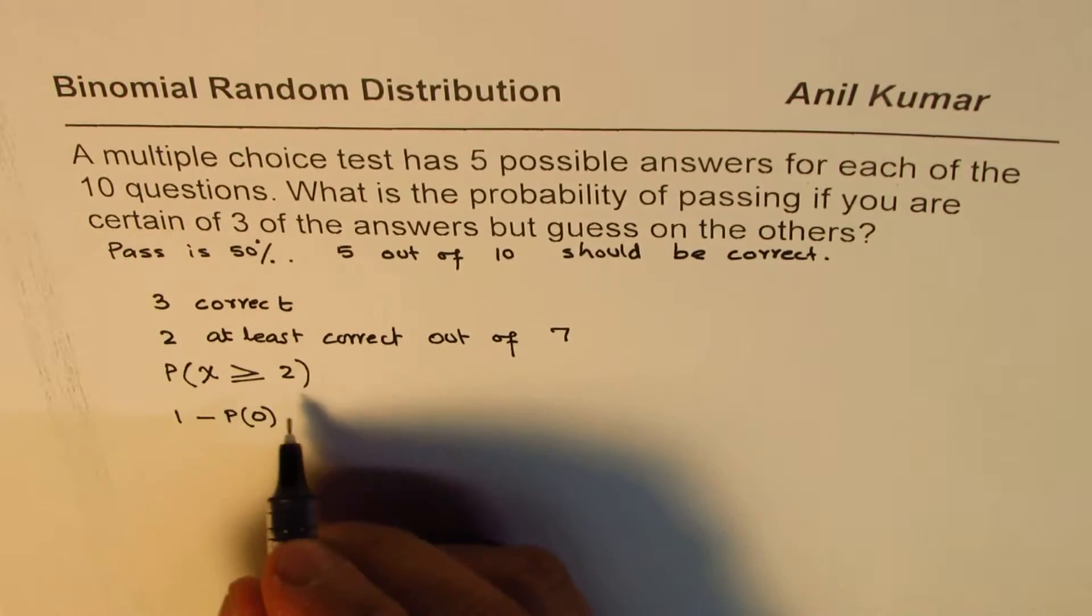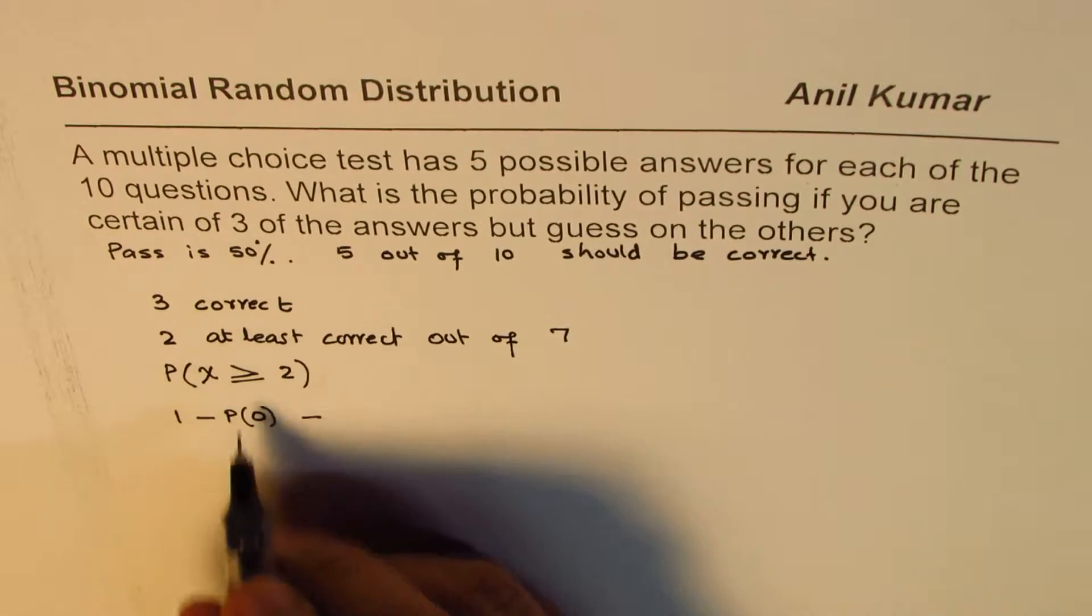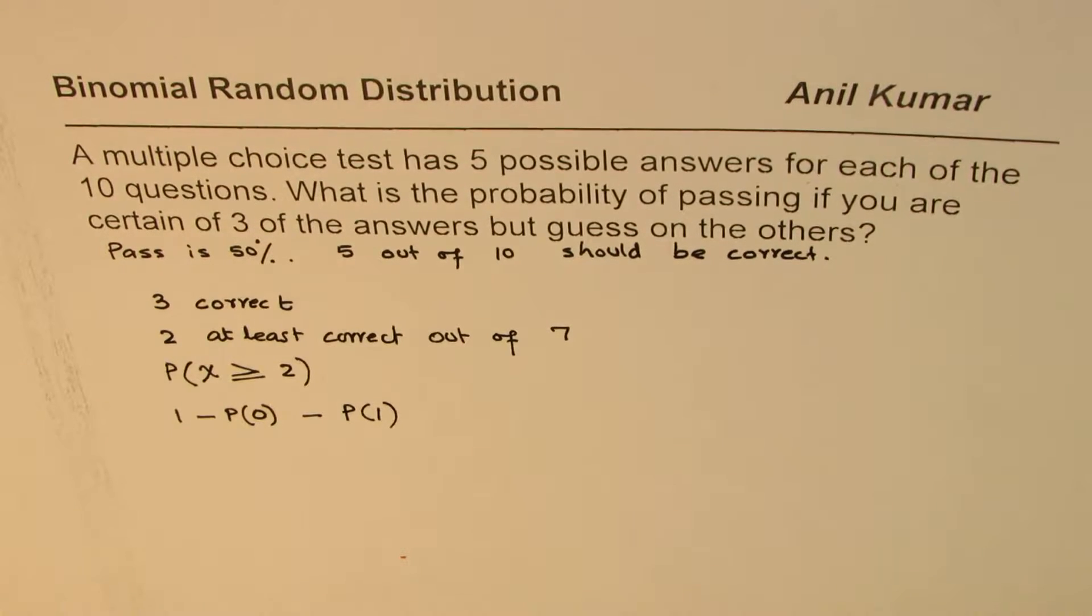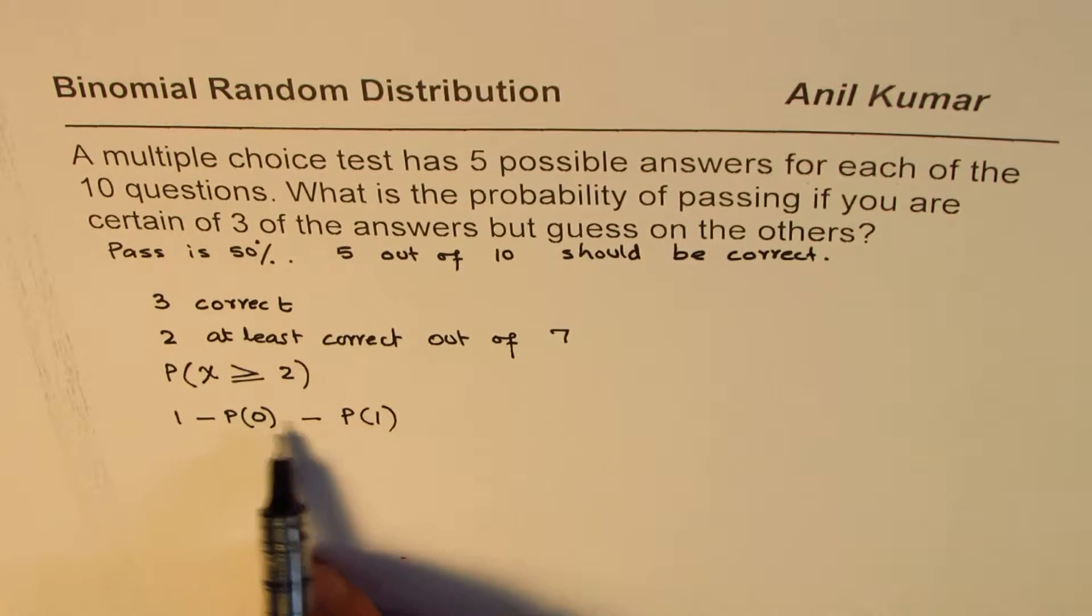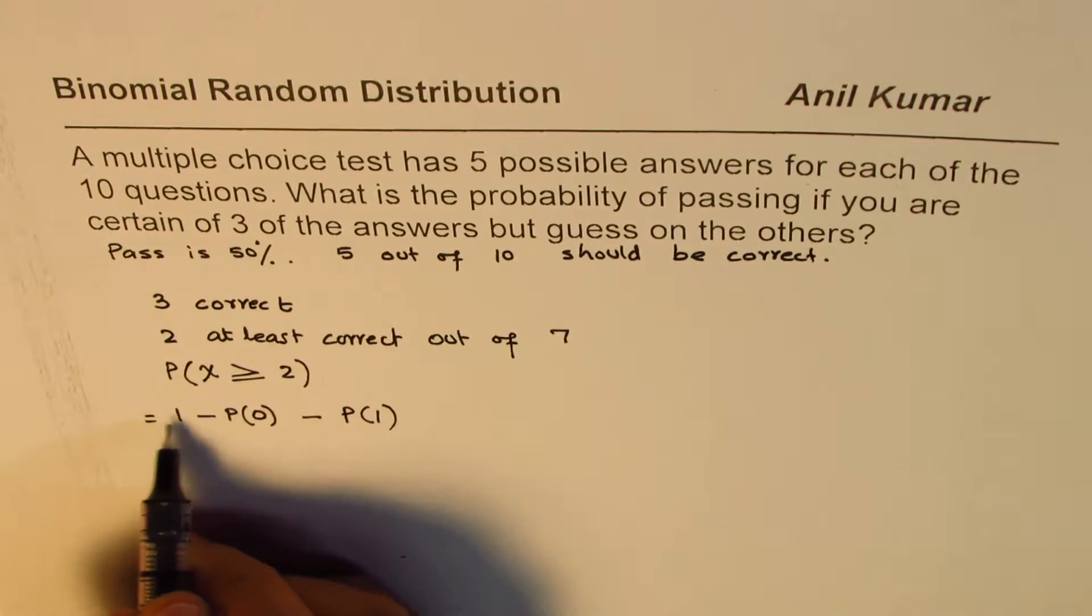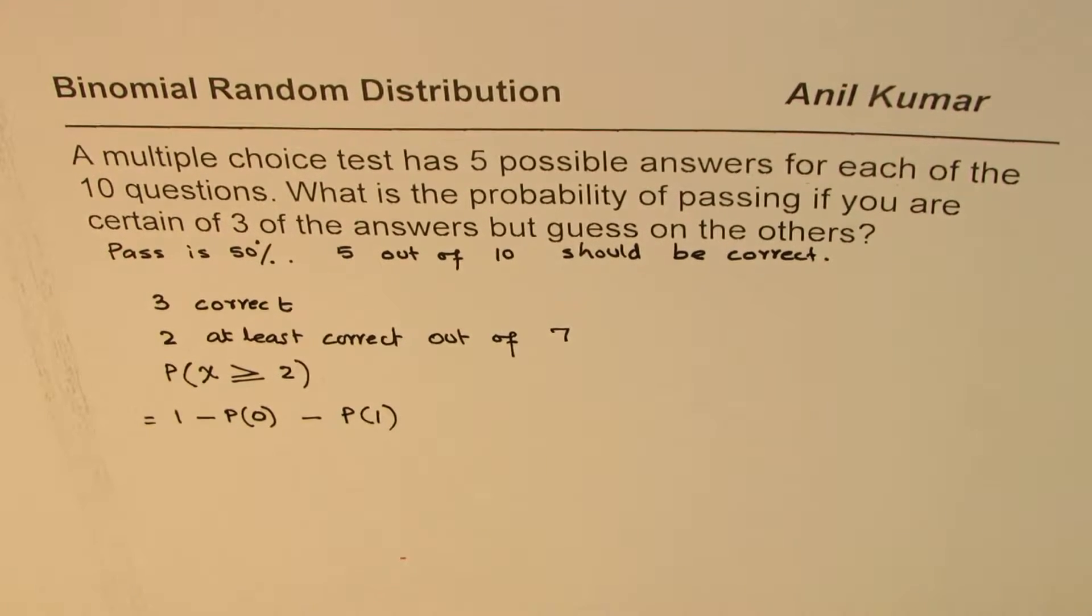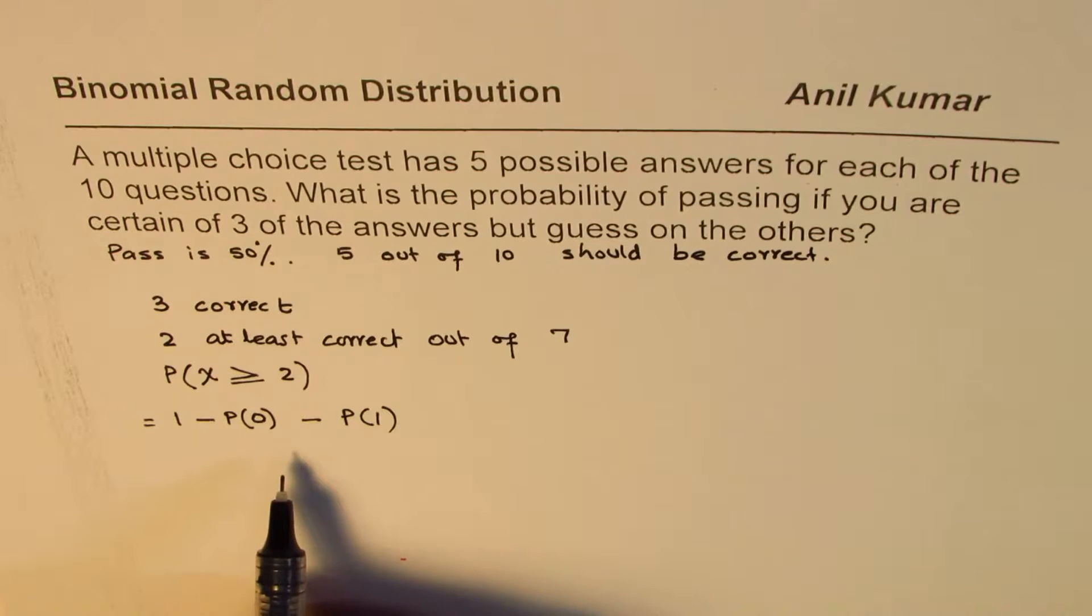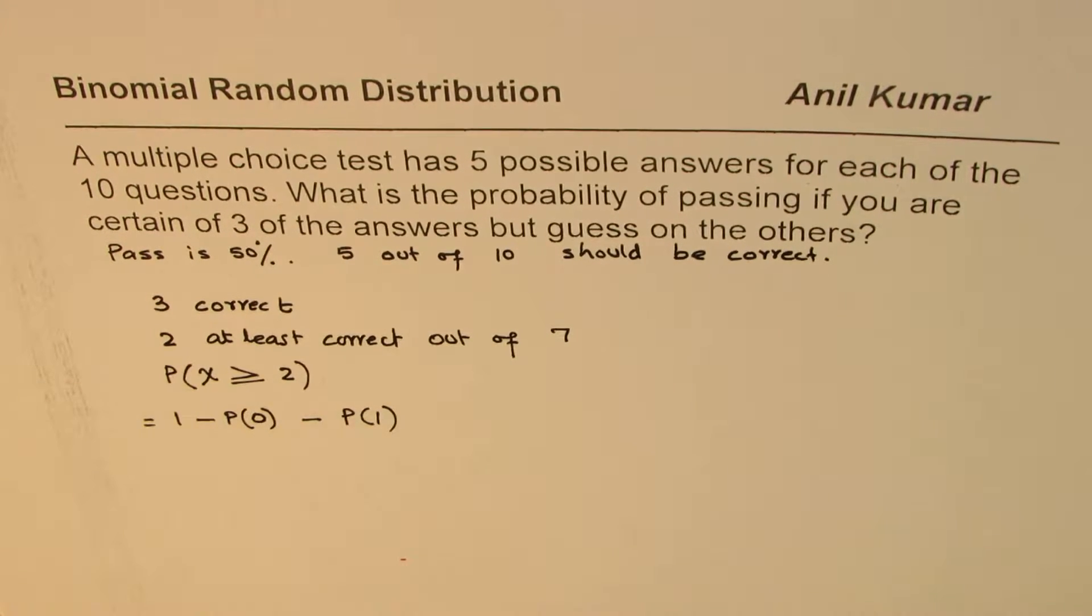So if you do no correct at all, you fail. Or you get just 1 correct. So this is what you will fail. So if I take away from 1 those things, we get the same answer. But that will require lesser amount of work. So the idea here is to use the complement of the function so that you can easily find the solution. Now let's look into the probability part.